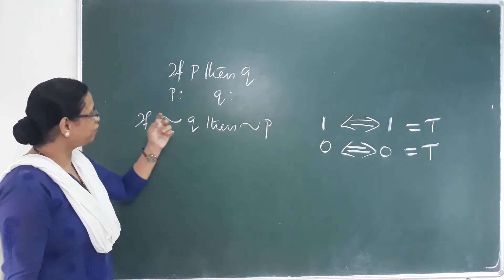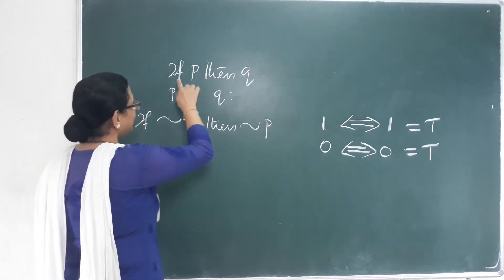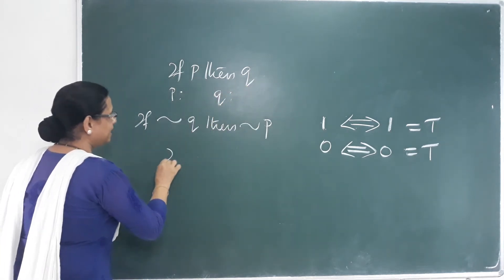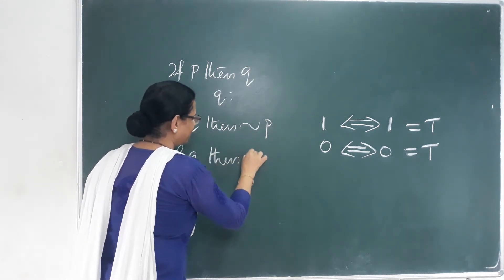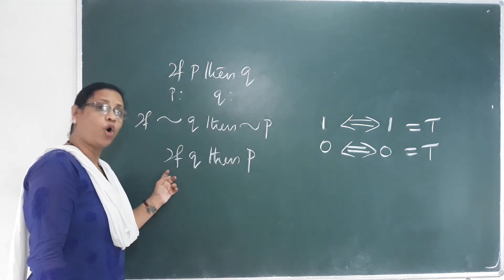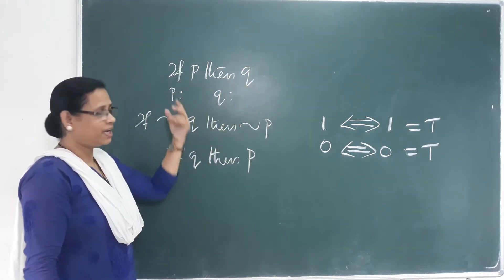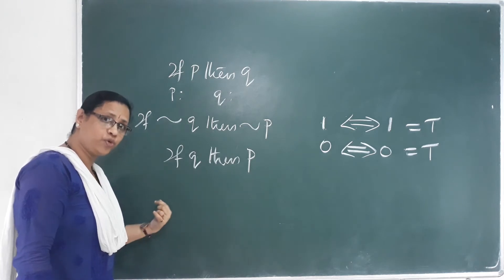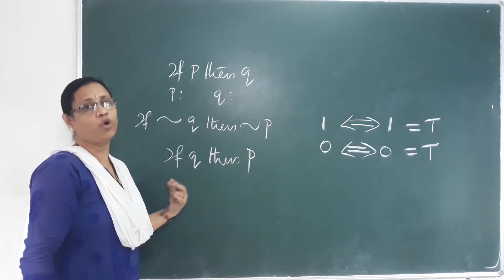That is: if negation Q, then negation P. In this case, if P then Q, and if Q then P — we call this Converse. We call it Converse: if P then Q, if Q then P.